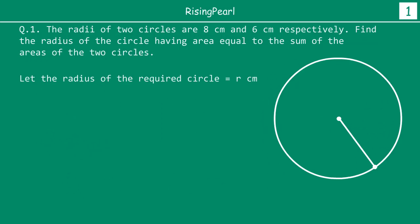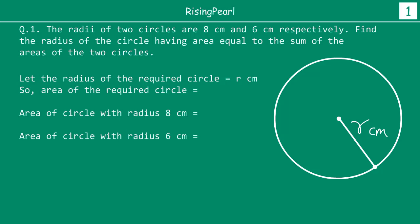So now that we understand what we are doing, let's find out how we go ahead and do it. Let the radius of the required circle be r cm. Area of the required circle from our formula will be πr². Area of the circle whose radius is 8 cm will be π·8². And similarly area of the circle with radius 6 cm will be π·6².